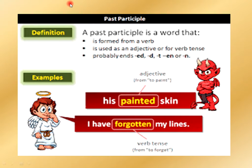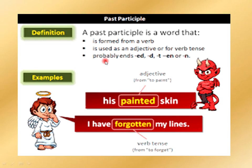A past participle is a word that is formed from a verb. It is used as an adjective or for verb tense. It probably ends with ed, d, t, en, or m.